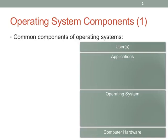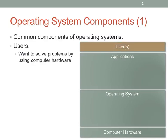Usually when you see people discuss operating systems, you'll see them talk about these various aspects of the world that OSes live in. You have users, and then underneath users are applications, and underneath applications are the operating system. And then obviously underneath the OS is computer hardware. Those are the four main components that you typically have in these systems.